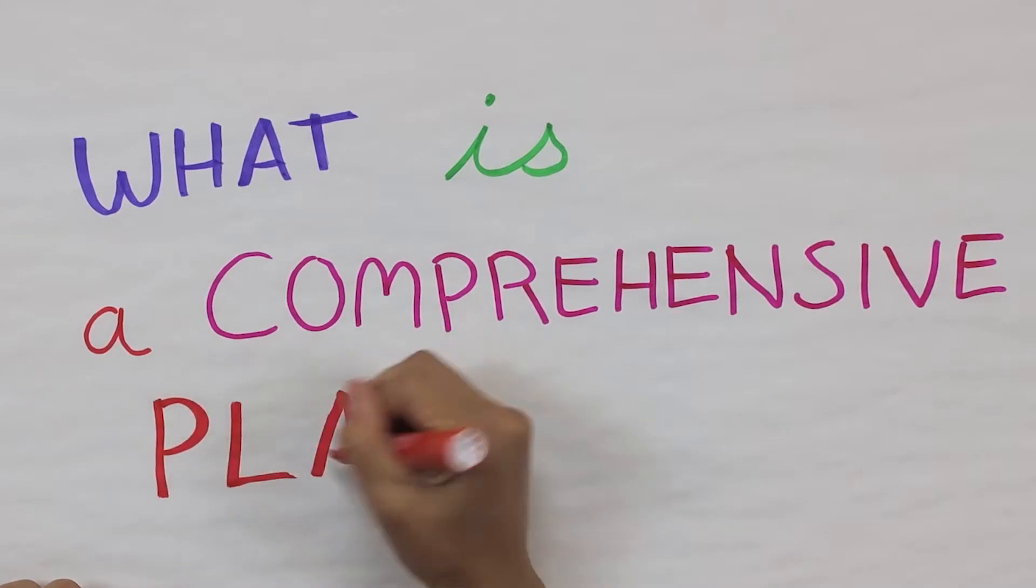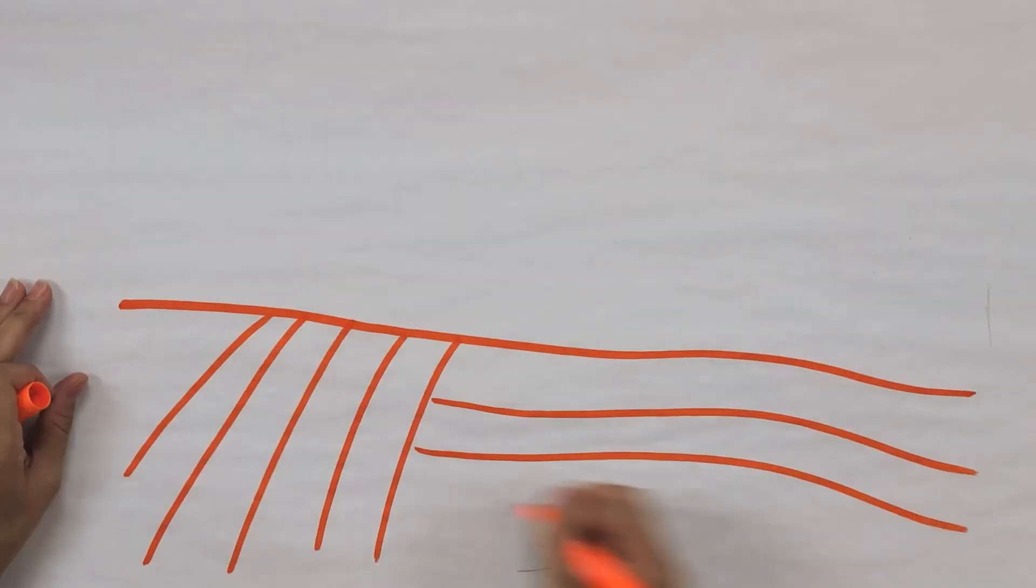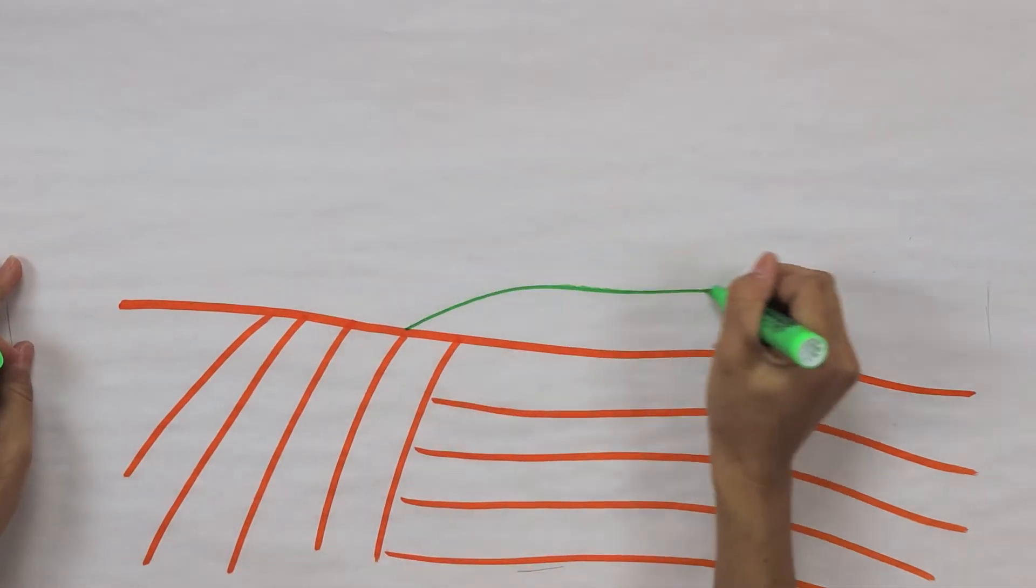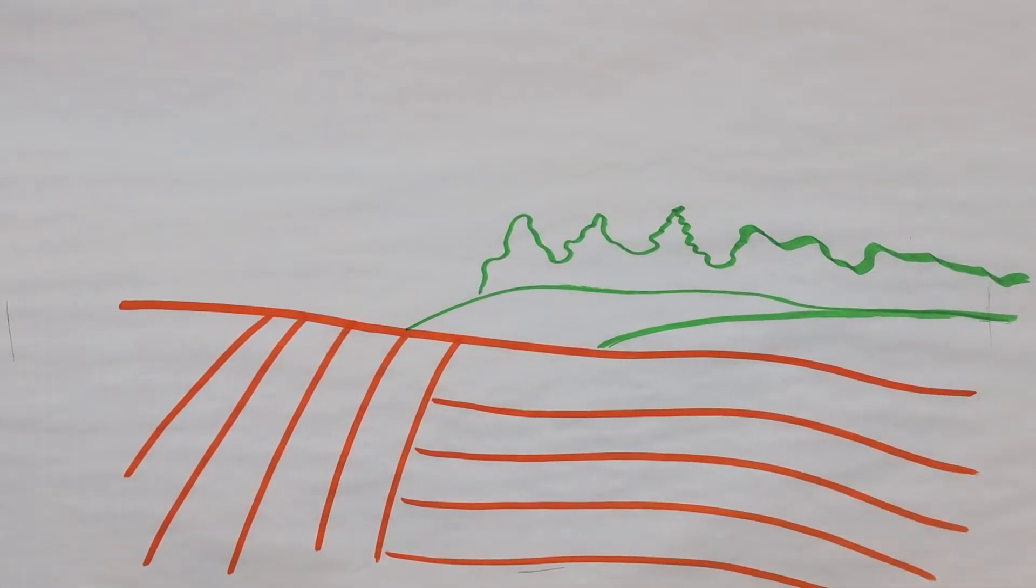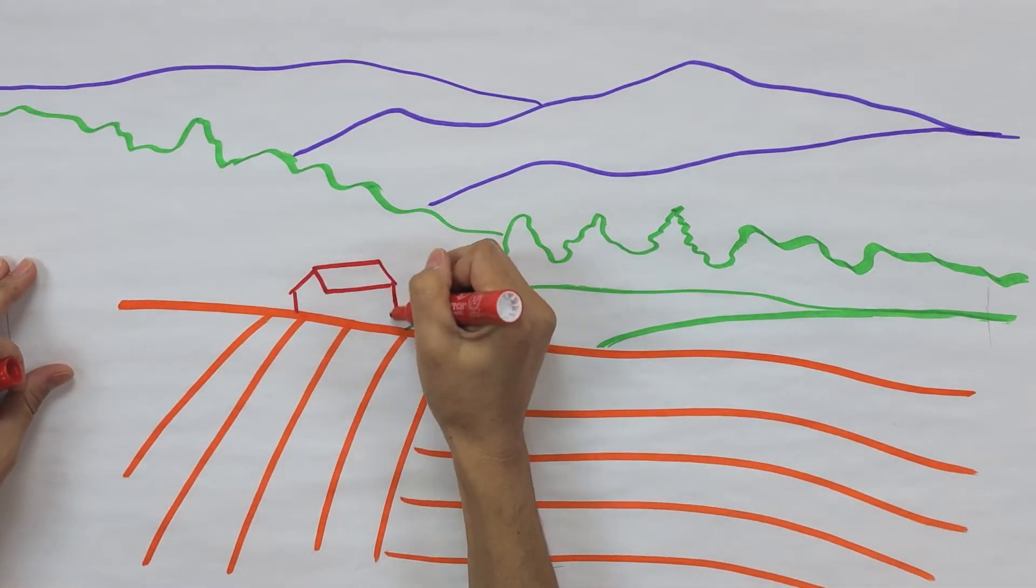What is a comprehensive plan? It's the document that's created when the community comes together to make a plan for what it wants the future to be like. The plan looks 20 years into the future by asking residents what